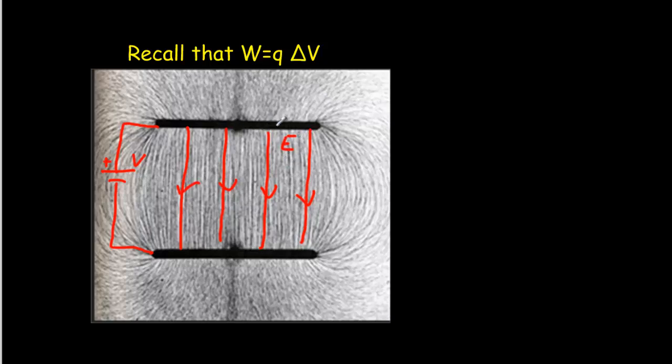So that uniform electric field would push any charge, any positive charge, towards the negative plate in the same direction as the electric field.